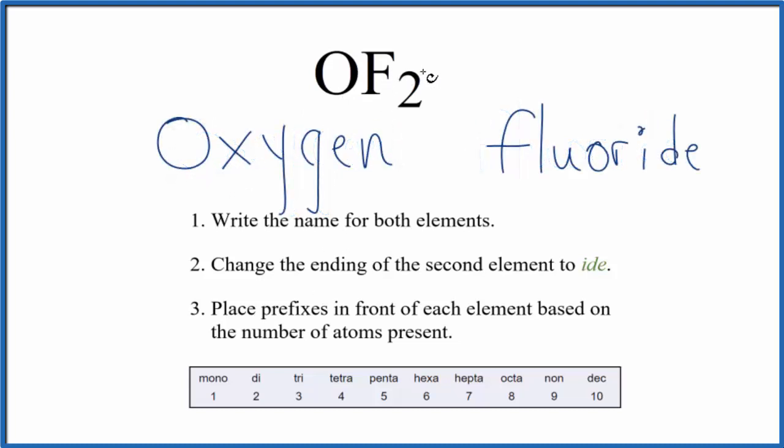For the fluorine, we have two fluorine atoms. And since we have two fluorine atoms, we use the prefix di. So we're going to have oxygen difluoride. So the name for OF2 is oxygen difluoride.